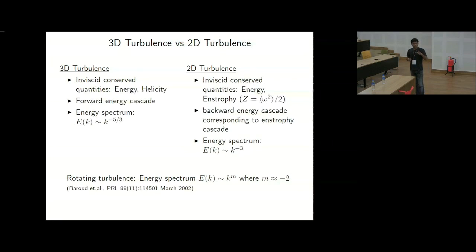So for rotating turbulence, it is K to the power m, where m is approximately minus 2. It is actually above minus 2. This is an experimental work done by Baroud et al. and published in 2002 in PRL.